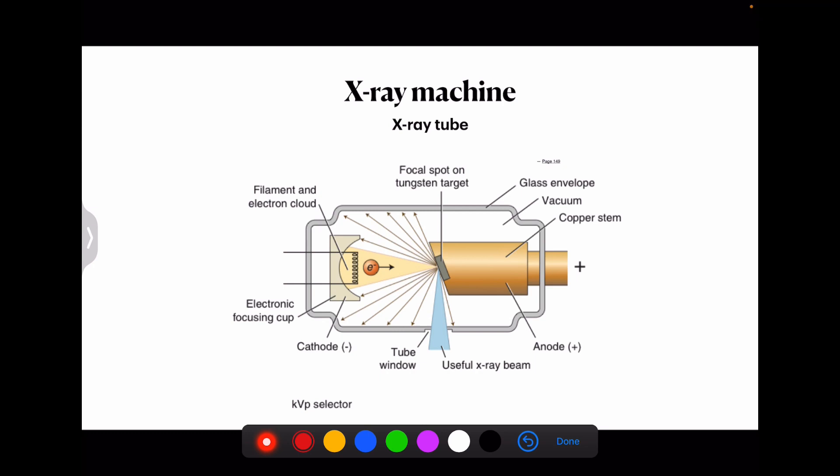Then coming to discussing the x-ray machine. Here you can see the x-ray machine with different parts. First we will discuss the x-ray tube. This x-ray tube consists of a cathode and an anode. A cathode is a tungsten filament as you can see here and is a source of electrons within the x-ray tube.